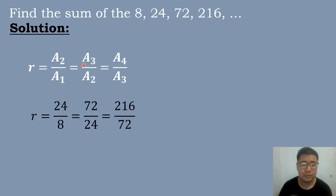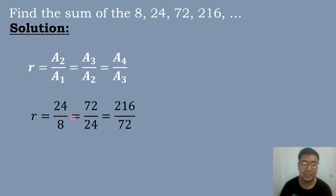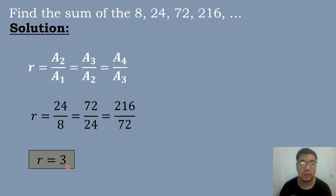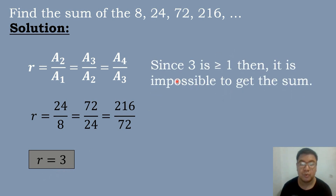We will substitute the values: A sub 2 is 24, A sub 1 is 8, A sub 3 is 72, A sub 2 is 24, A sub 4 is 216, and A sub 3 is 72. So 24 divided by 8 equals 3, 72 divided by 24 equals 3, and 216 divided by 72 equals 3. The common ratio is 3. Since R equals 3, this falls in condition number 1, so it is impossible to get the sum.